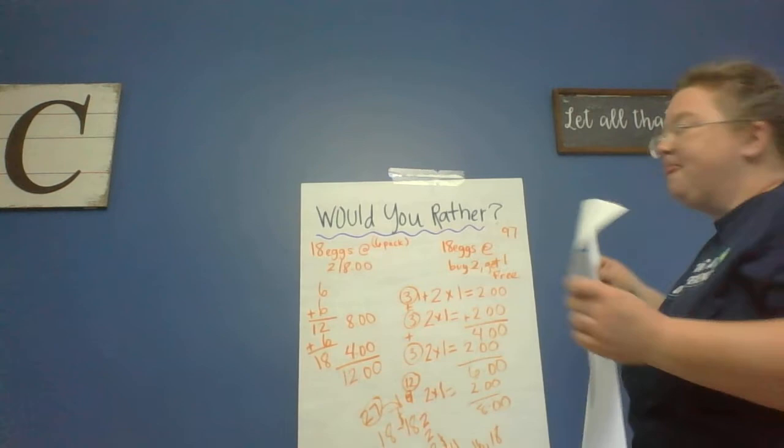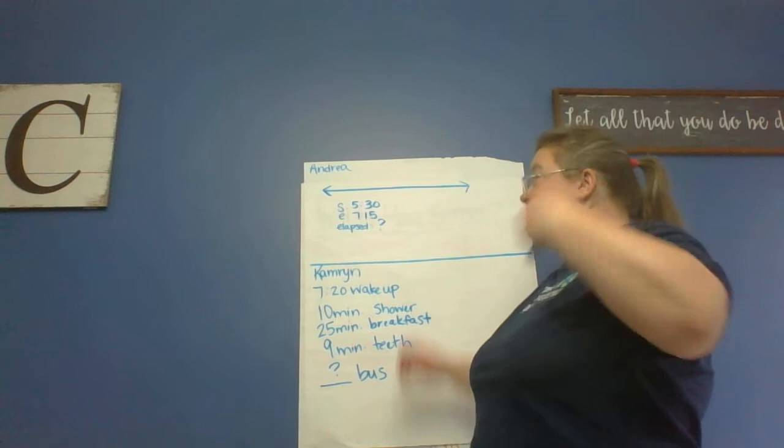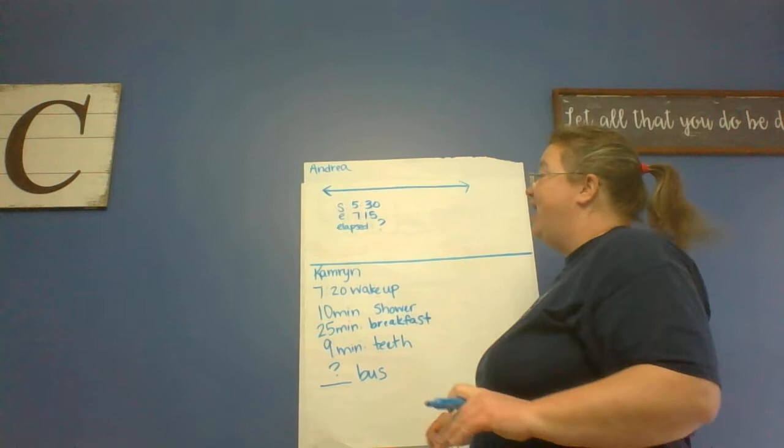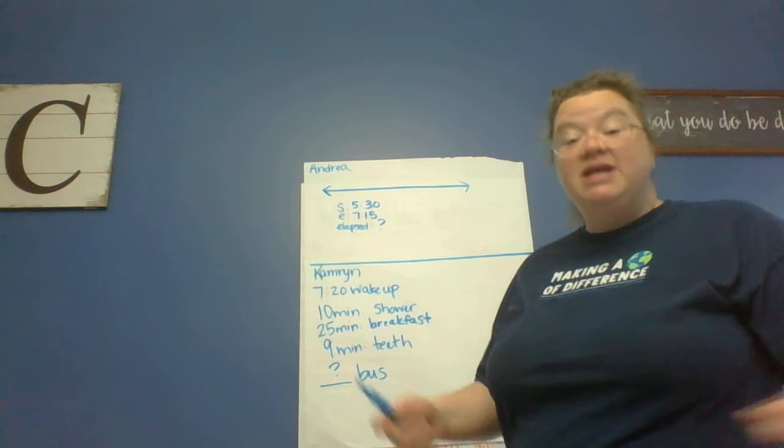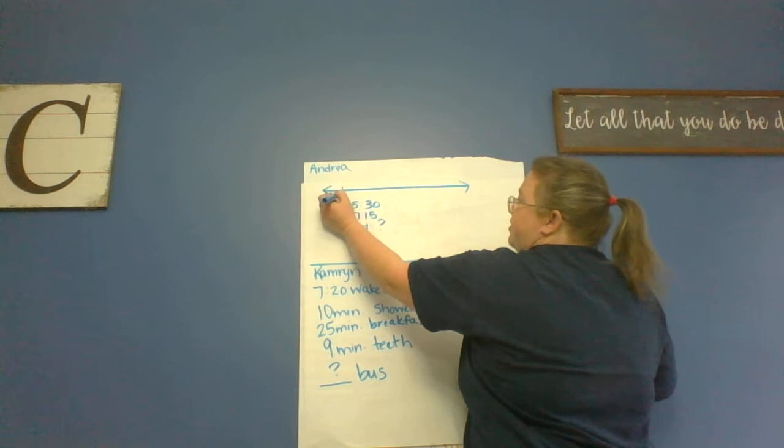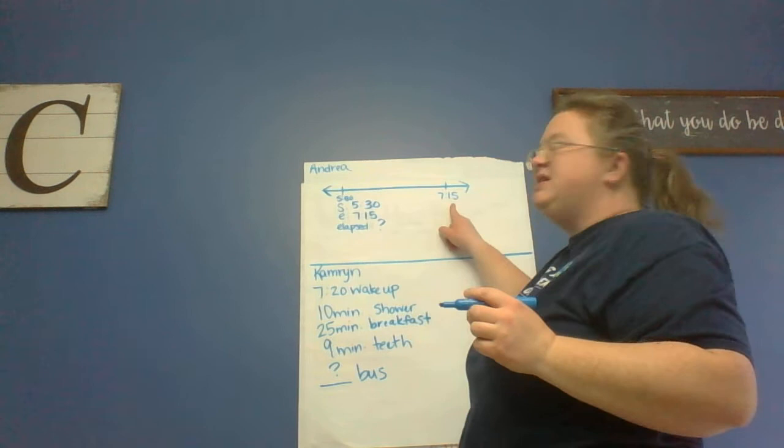Now I'm going to model a couple more elapsed time problems for you. These will be on the next two slides of your measurement practice slides. The first one told us that Andrea is at soccer practice. She stopped soccer practice at 7:15, she started soccer practice at 5:30. And remember with elapsed time, we need to think about start time, end time, and elapsed time, the time that passes in between. So we have the start and the end, the unknown here is our elapsed. So I'm going to put my start time here, 5:30. Now I'm going to go ahead and put my end time, 7:15.